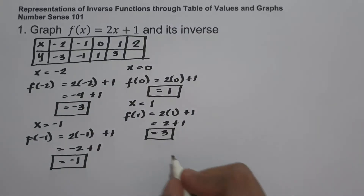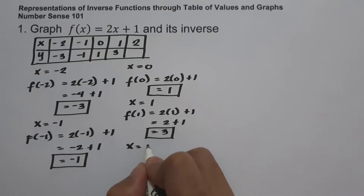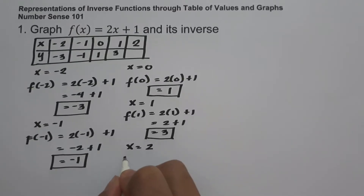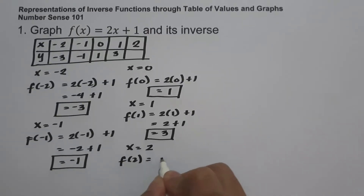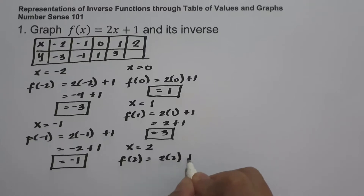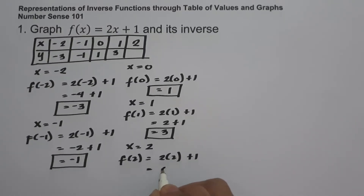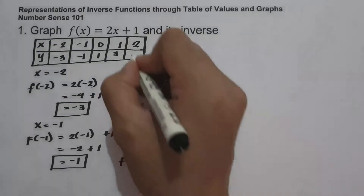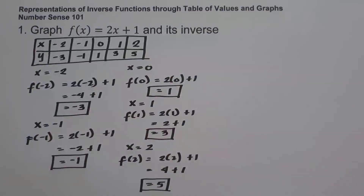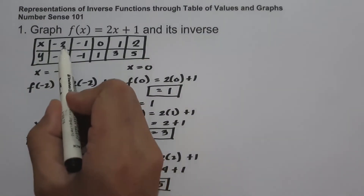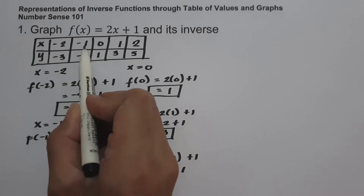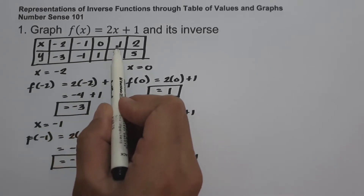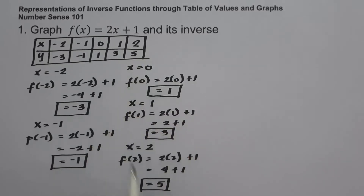And lastly, for x equals 2: f of 2 equals 2 times 2 plus 1. Two times 2 is 4, plus 1, and that is 5. So these are the set of ordered pairs in the given function: negative 2 and negative 3, negative 1 and negative 1, 0 and 1, 1 and 3, and 2 and 5.